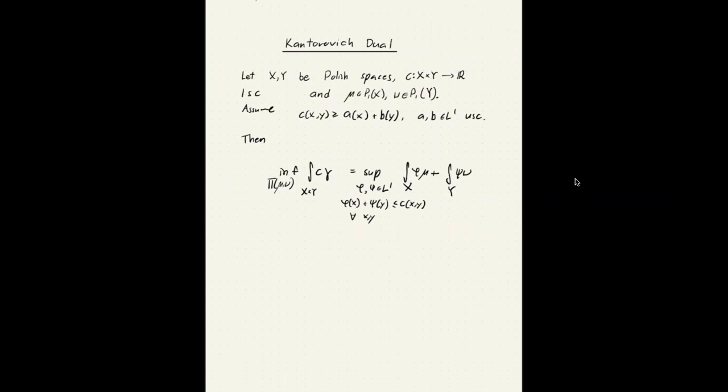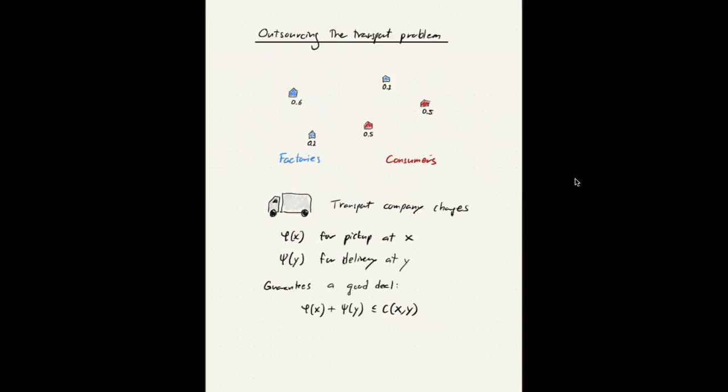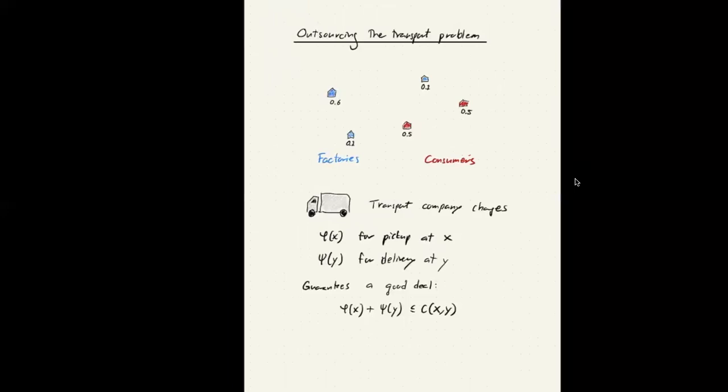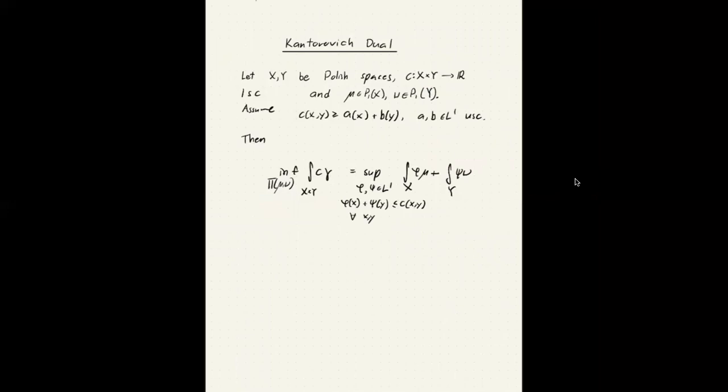The fact that we have equality here means that there is a way for them to set their prices, to specify phi and psi, in such a way that they will get arbitrarily close to what we would pay if we would arrange the transport ourselves.